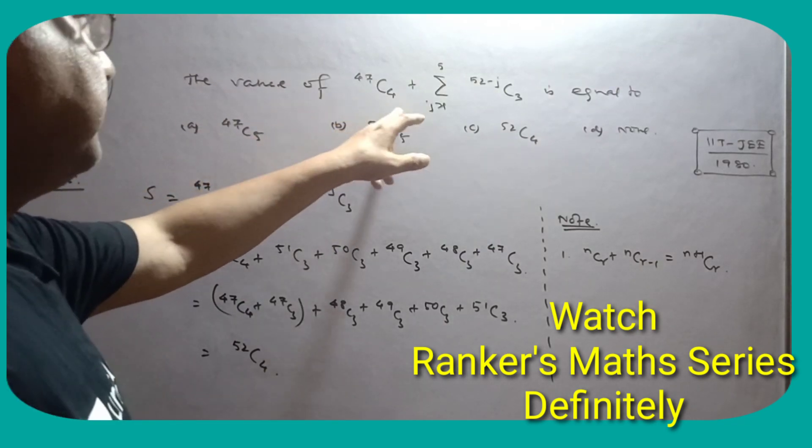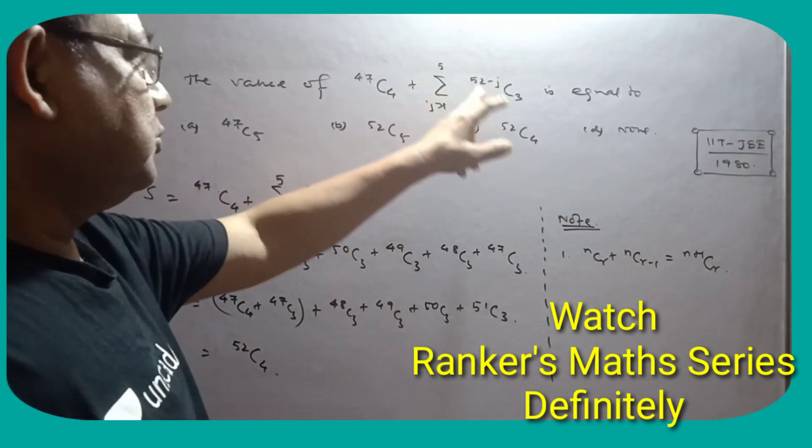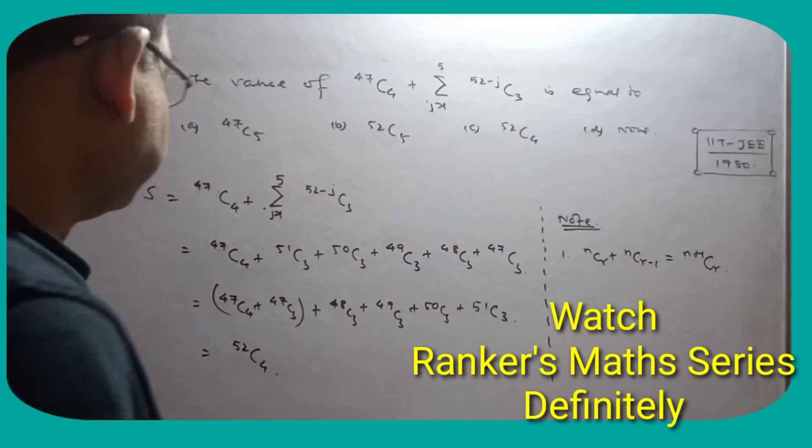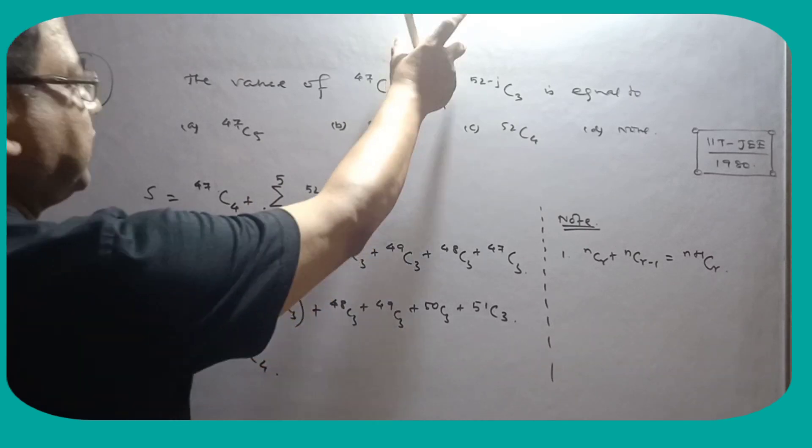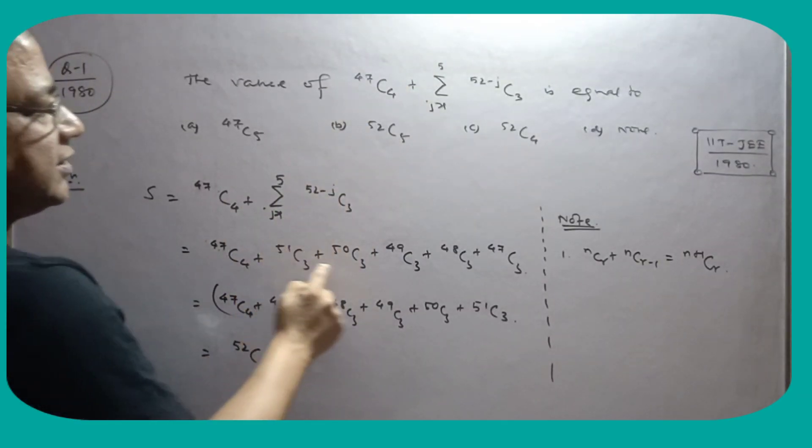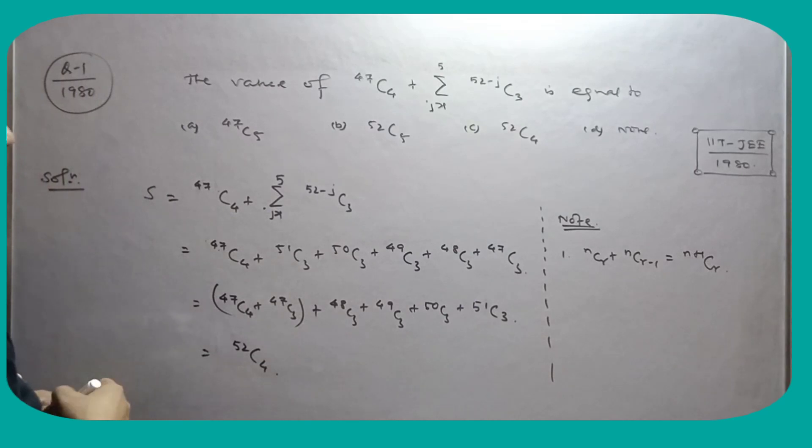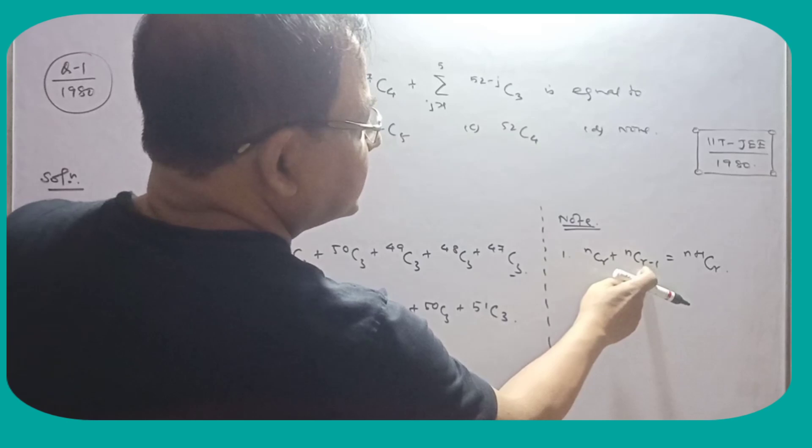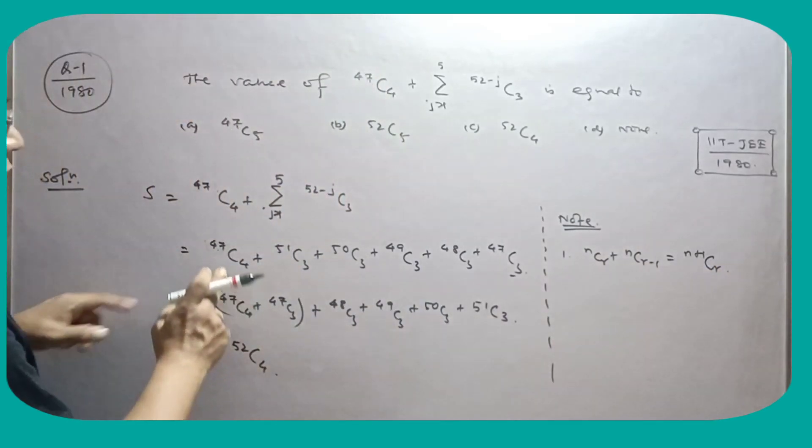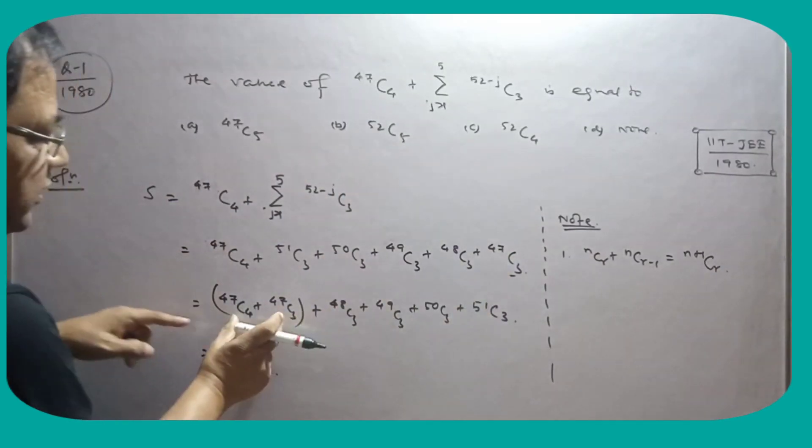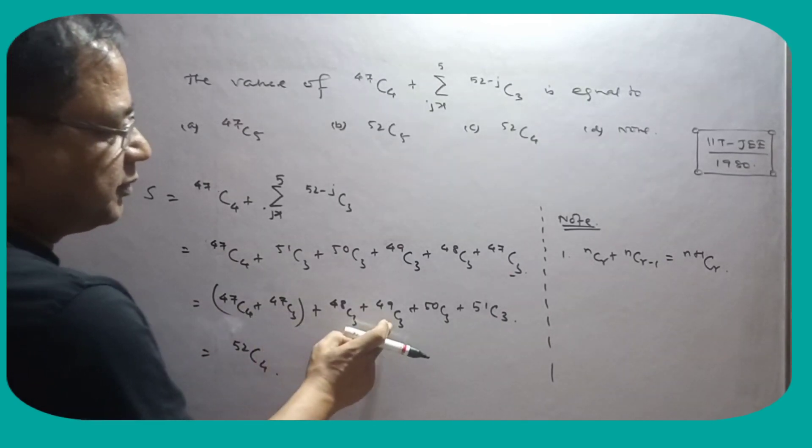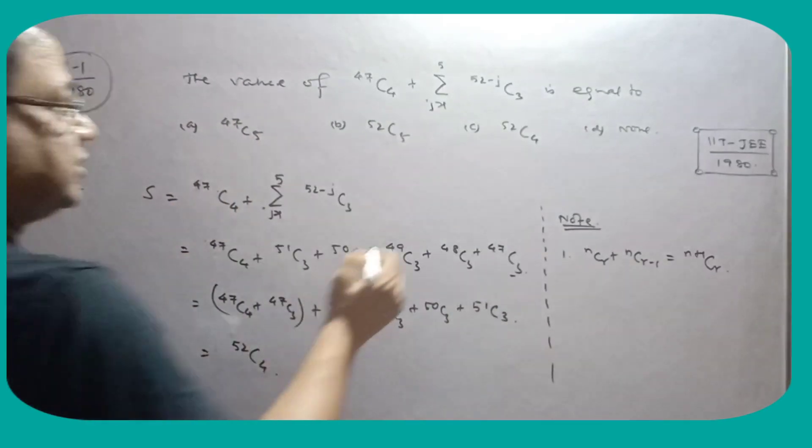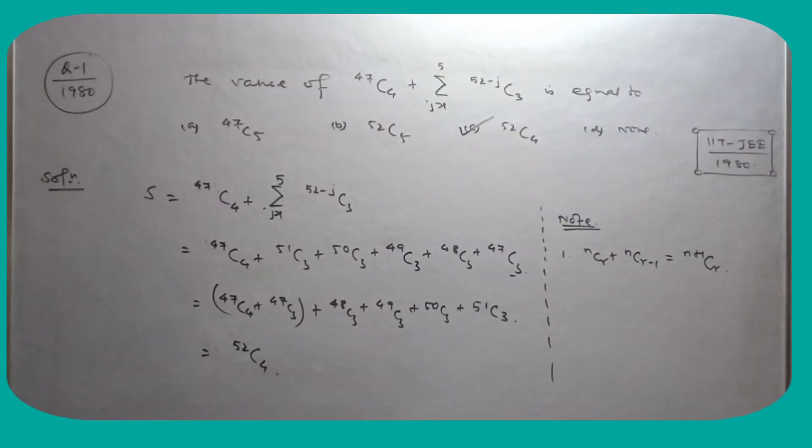Now, find the value of 47C4 plus summation j equals 1 to 5 of 52-jC3. Consider it like this and use the formula: nCr plus nCr-1 equals n+1Cr. Combining these, you get 48C4 plus 49C4 plus 50C4 plus 51C4 plus 52C4. So this is the only right choice for this question.